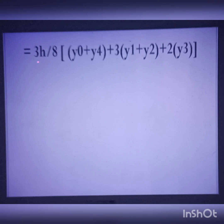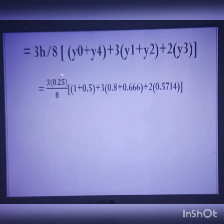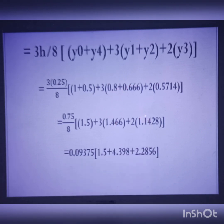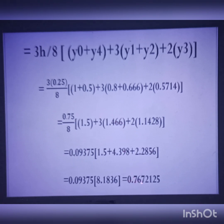The Simpson's 3/8 rule formula is: 3h/8 times [Y0 plus Y4 plus 3 times (Y1 plus Y2) plus 2 times Y3]. Substituting the values: adding 1.5 and 0.7672125 to evaluate the result.